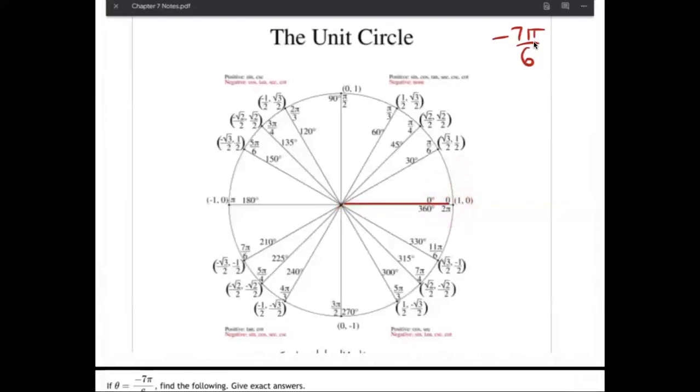Okay, and 7π over 6 is right here. That's positive though. That's positive 7π over 6. So in other words, if we go from here to here, that is going to be positive because it goes up. This is positive. That angle is positive 7π over 6 because it goes up from zero.